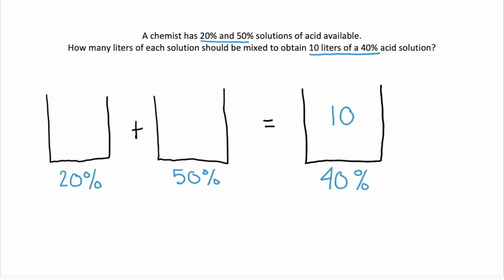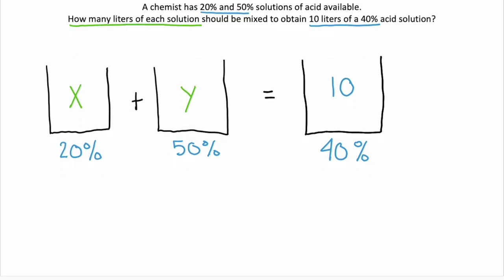And then what is it we're trying to find? Well, we're trying to find how many liters of each solution do we need to mix together. So we'll call those our x and our y. And right off the bat, we can see that x plus y has to equal 10 liters. That's our first equation, x plus y equals 10. Because the number of liters in x plus the number of liters in y need to be a total of 10 liters, as we're told in that second sentence.